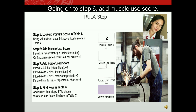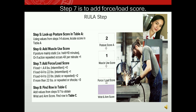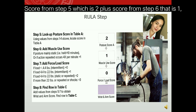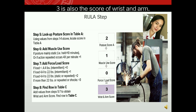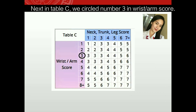Step six adds the muscle use score. Since the posture is mainly static, we score it a plus one. Step seven adds the force and load score; since the load is less than 4.4 pounds, it is scored zero. The score from step five, which is two, plus the score from step six, which is one, gives a result of three — this becomes the score in step eight, and three is also the wrist and arm score. In Table C, we circle number three in the wrist and arm score column.